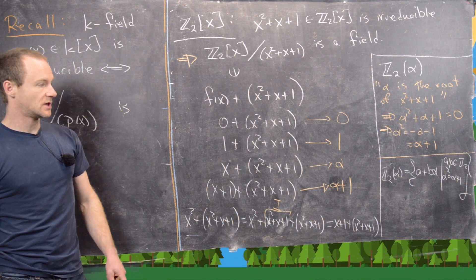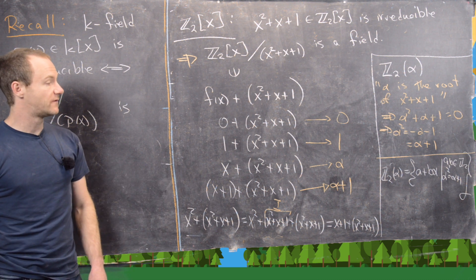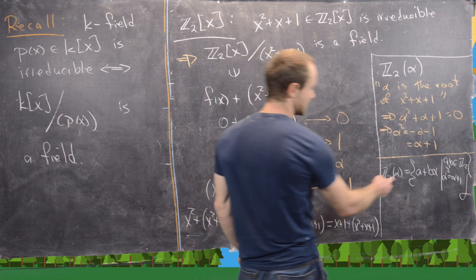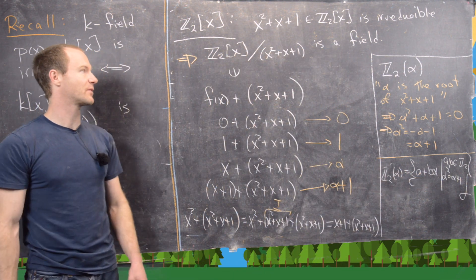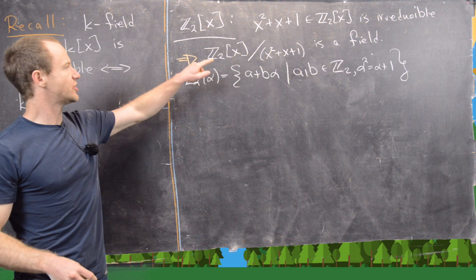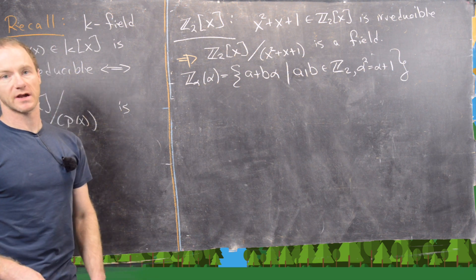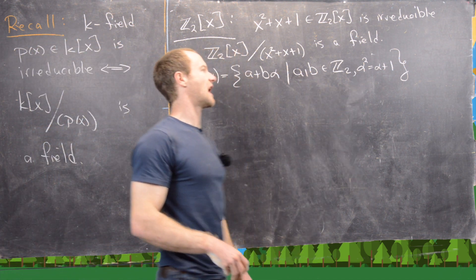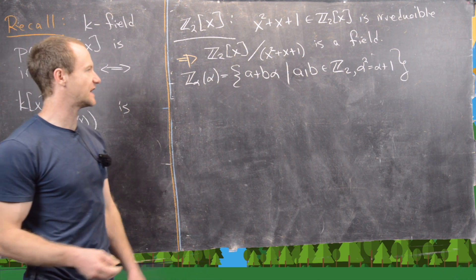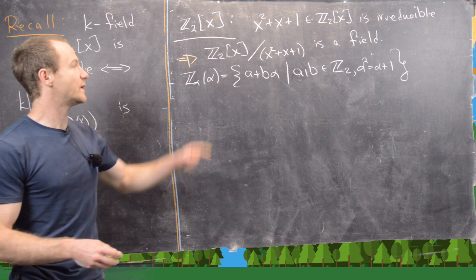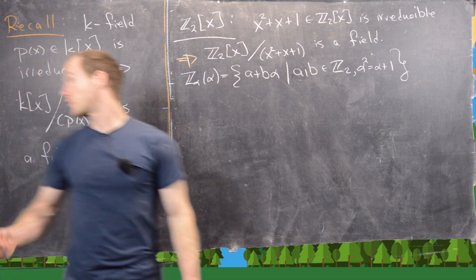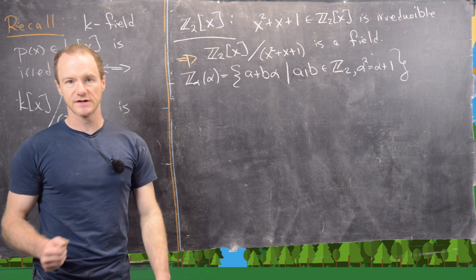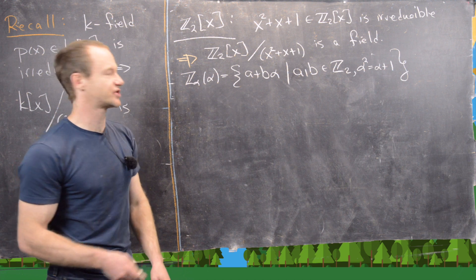Using that rule, we can make an addition and multiplication table for Z₂[α] to show it is a field of order four. There are four elements because we have two choices for each of a and b. This object is a field by our general result, and Z₂[α] is just another way of writing the quotient ring.